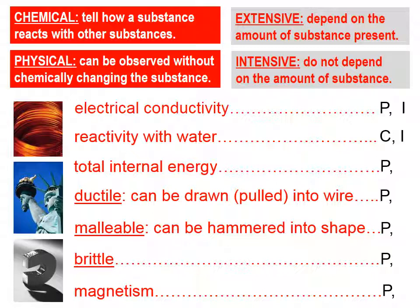As an aside, all chemical properties are intensive properties. Total internal energy, on the other hand, is an extensive property. The amount of a sample clearly affects how much total internal energy it has. If you have a very tiny bit of boiling water and spill it on your skin, it's not very pleasant. But if you have a bucket full of boiling water and spill that on your arm, that's something entirely different. So the amount of total internal energy certainly does depend on the amount of substance.